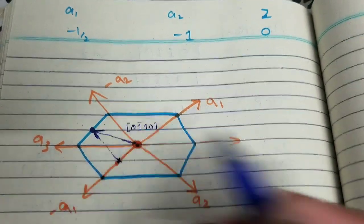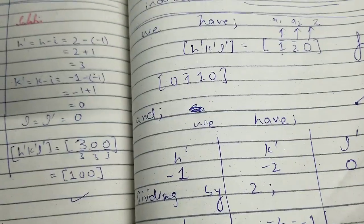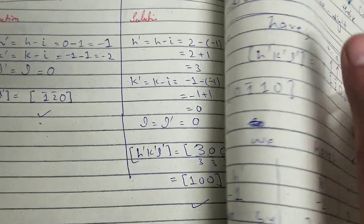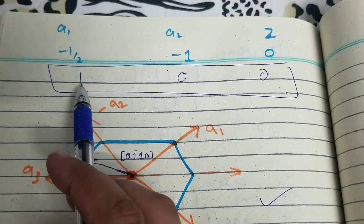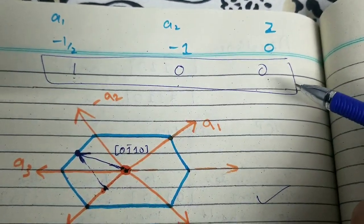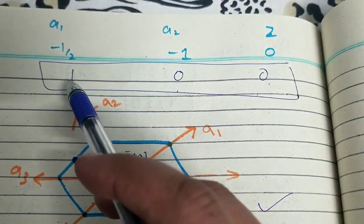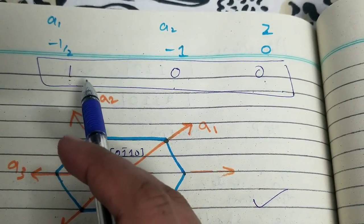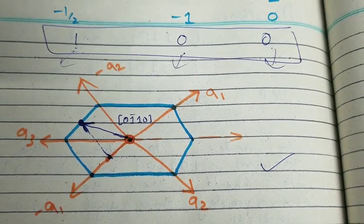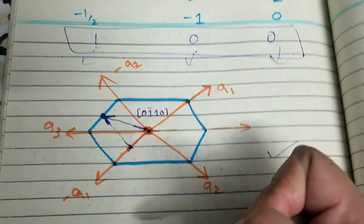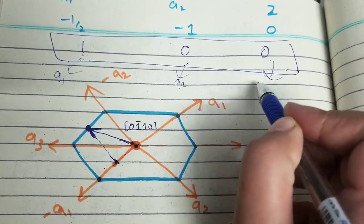Now we draw the second direction [2 1̄ 1̄ 0], which has three-digit Miller indices [1 0 0]. These are also the head coordinates of the vector: a1 = 1, a2 = 0, z = 0. There is no need to divide by any LCM since the LCM is 1, so these are the final head coordinates. Again, z = 0, so only the basal plane is needed.